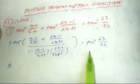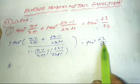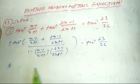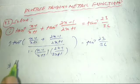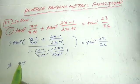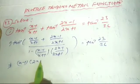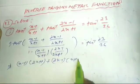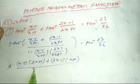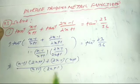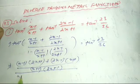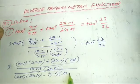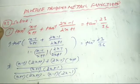Since the tan inverse functions are applied equally, using the tan inverse addition formula, we simplify. The numerator becomes: (x-1)(2x+1) plus (2x-1)(x+1), and the denominator becomes: (x+1)(2x+1) minus (x-1)(2x-1), all divided by (x+1)(2x+1).